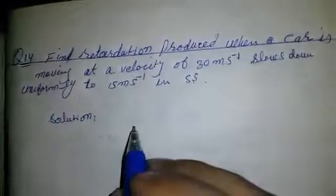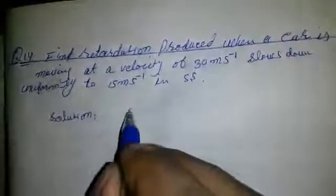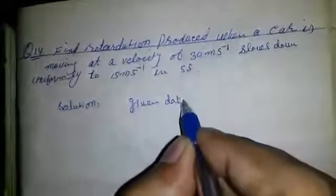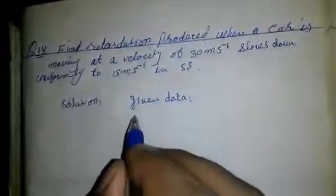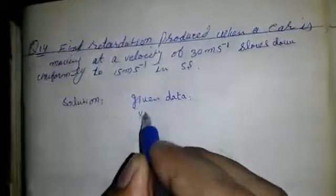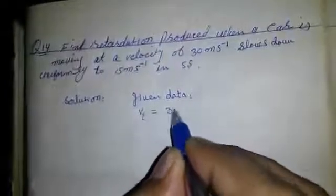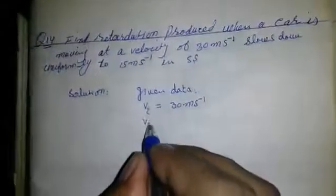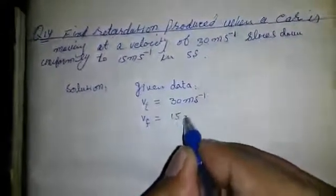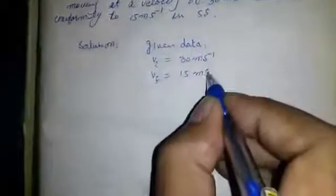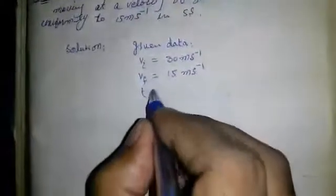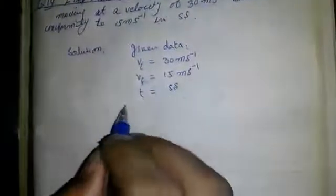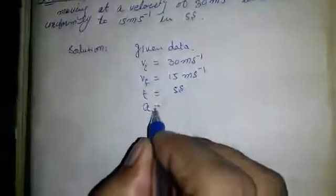Its solution: First of all we write given data. Its initial velocity vi = 30 meters per second. Its final velocity vf = 15 meters per second. And time t is equal to 5 seconds. We have to find a or retardation.